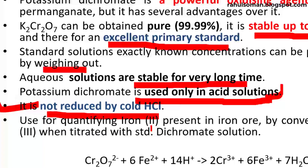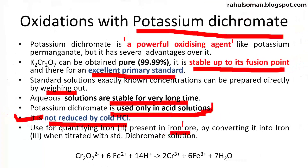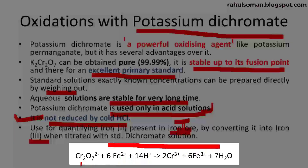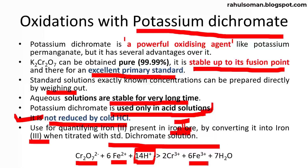Potassium dichromate is commonly used to quantify iron ore — specifically Fe²⁺. Iron(II) converts to iron(III) when titrated with potassium dichromate. When titrating with ferrous ions in the presence of a very strong acid, the iron converts to its ferric form (Fe³⁺), while chromium undergoes reduction from its +6 to +3 oxidation state. This is a 6-electron process in which the dichromate ion receives 6 electrons and converts to Cr³⁺.